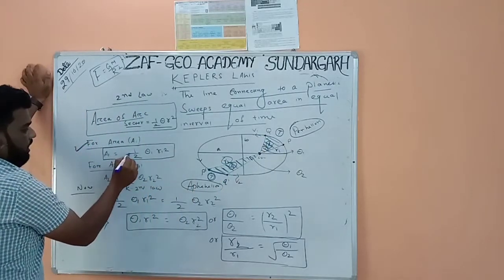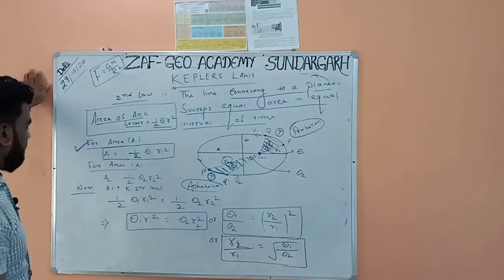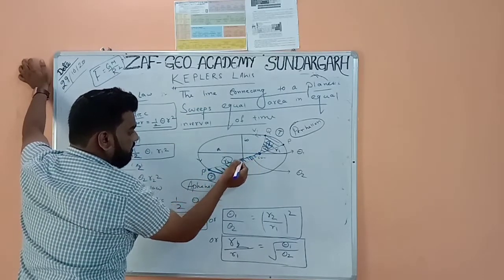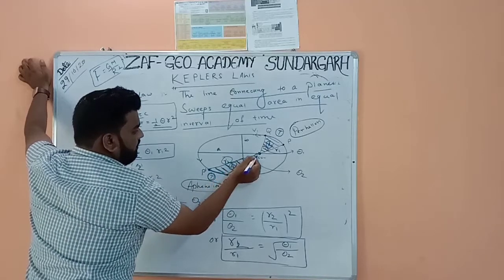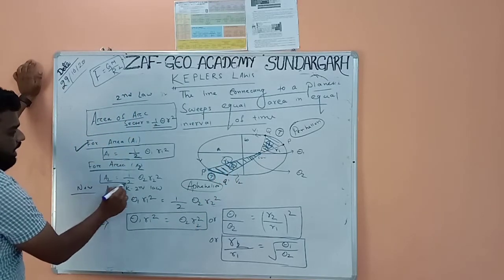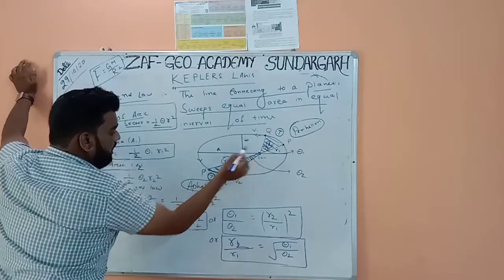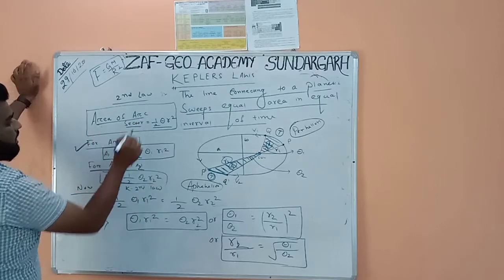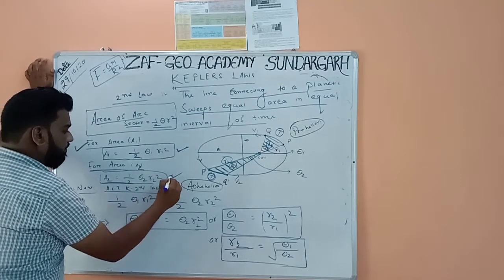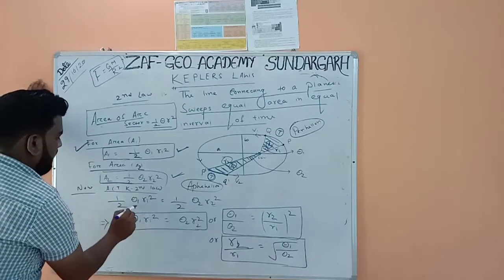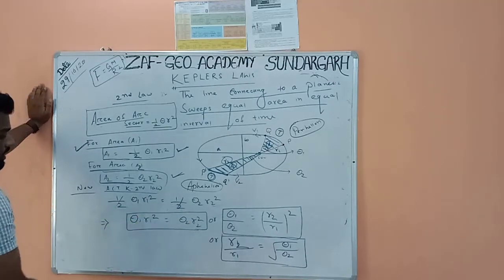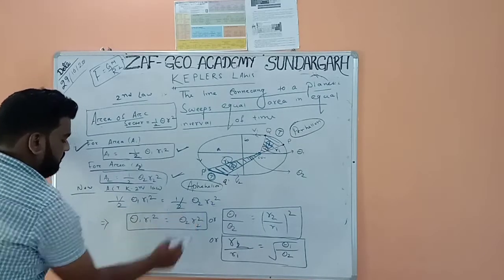Area A1 of the arc sector is equal to ½·θ1·r1². For area A2, this is also an arc sector, and A2 = ½·θ2·r2², using the arc sector area formula. According to Kepler's second law, area A1 must equal area A2. So ½·θ1·r1² = ½·θ2·r2². The halves cancel, leaving θ1·r1² = θ2·r2².